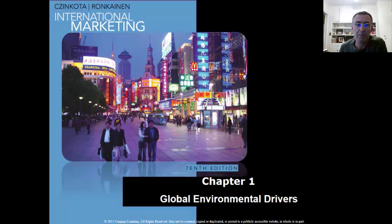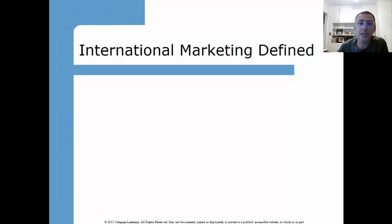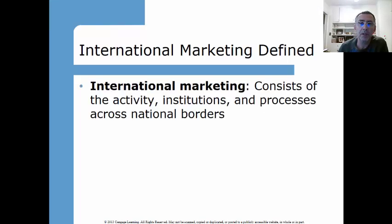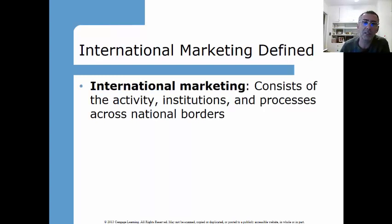I'll also post this recording so that you'll be able to hear the lecture and see the slides at the same time. So, international marketing defined: the first basic definition consists of activities, institutions, and processes across national borders. We're taking marketing — you recognize the definition — and we're taking that across the border.